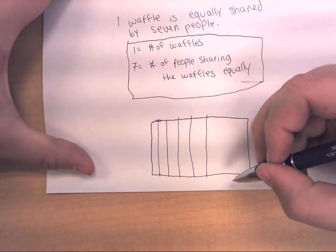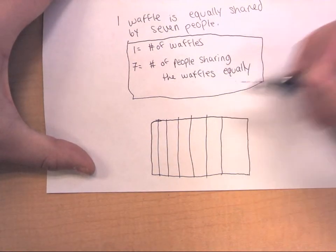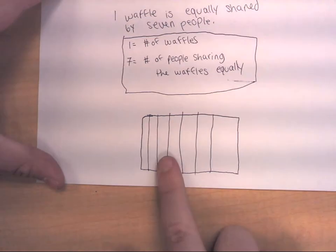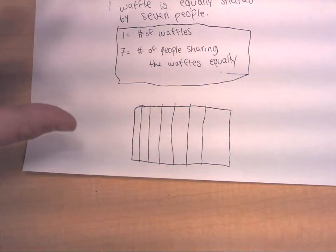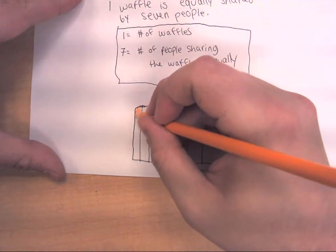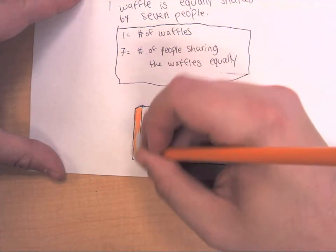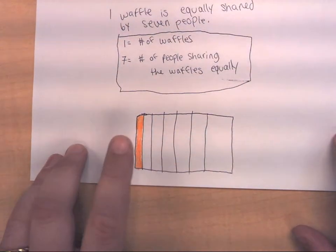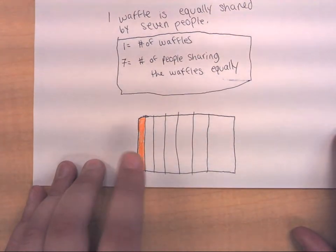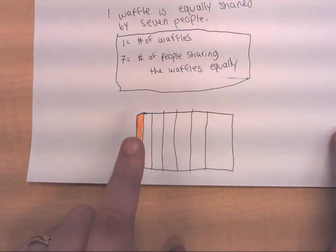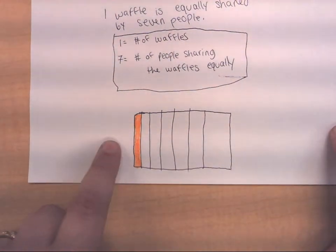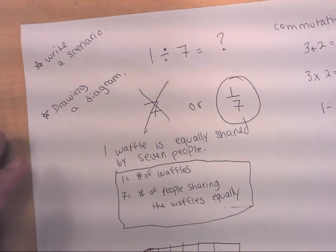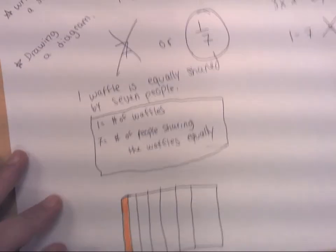These parts are not going to look very equal — I apologize. So we've divided one whole into seven equal sections. Please use your imagination and assume each section is equal. If we share one waffle with seven people equally, each person gets one equally-sized piece out of the whole waffle. Since it's one piece out of seven, one divided by seven means each person would receive one-seventh of the waffle.